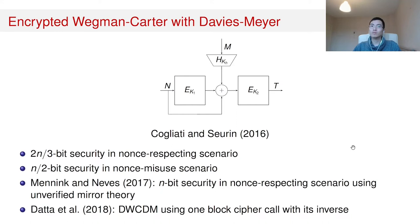Again, one year later, Nadal proposed the construction DWCDM, where D stands for decrypted. Instead of using an independent key in the second block cipher call of EWCDM, DWCDM uses the inverse of the block cipher call but based on the same key as the first one. Both EWCDM and DWCDM have the property that in the case of a nonce repetition, the security drops to the Bernstein bound.